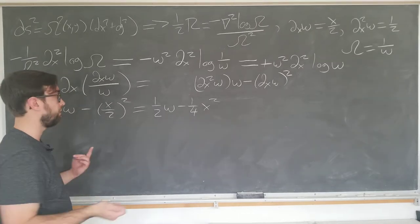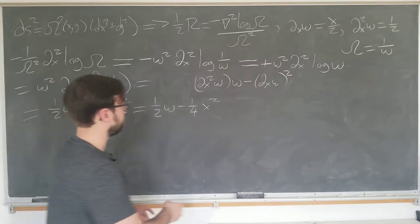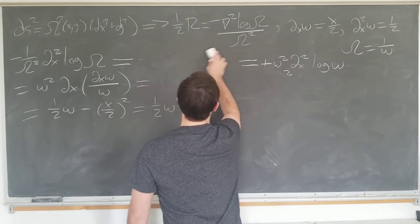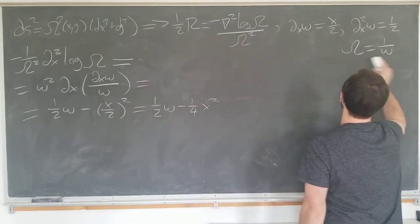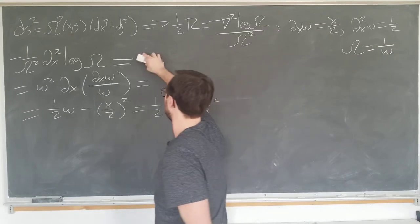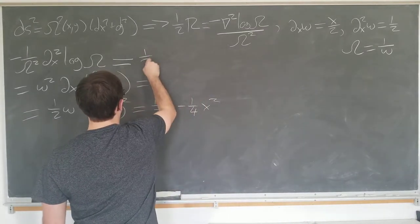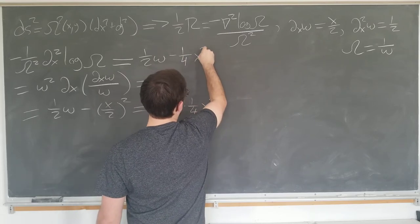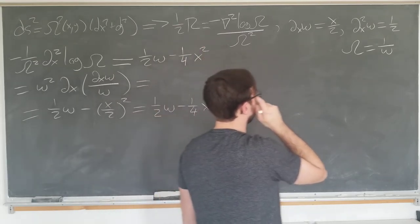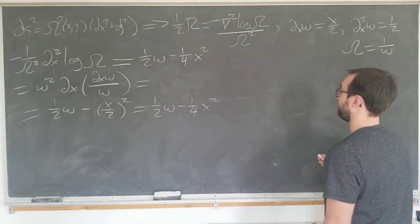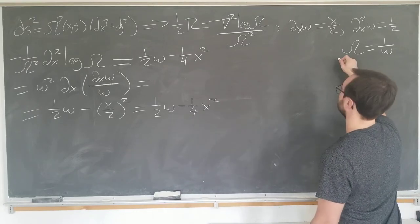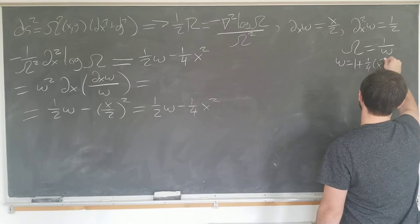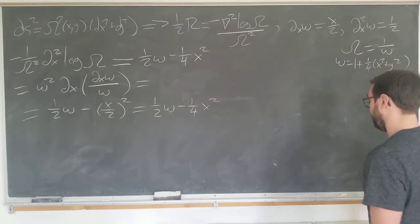And this is as far as we want to go before we incorporate the y's, so I'm just going to write our final result to give us more room. This x component is just one half omega minus one quarter x squared, and now we're going to need the definition of omega.